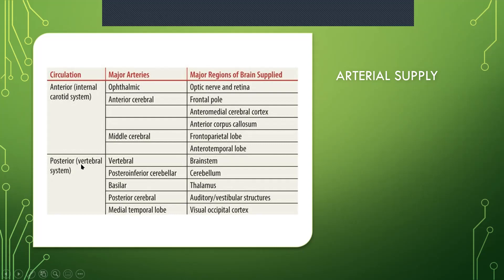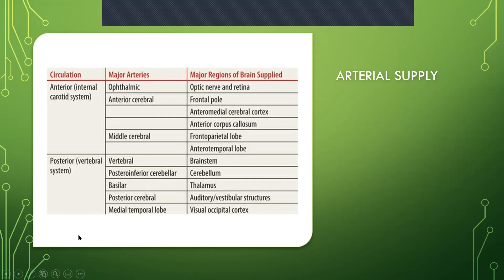The posterior comes off the vertebral system. Your vertebral artery affects your brainstem, so issues with blood pressure, heart rate, and breathing rate signal a problem there. Postero-inferior cerebellar artery affects your cerebellum — balance, gait, and classic cerebellar symptoms. The basilar goes to the thalamus; posterior cerebral covers auditory vestibular structures, medial temporal lobe, and the visual occipital cortex. It's nice to know all of these, but the truth is we don't see many anterior and posterior cerebral artery CVAs clinically. The majority are going to be middle cerebral artery.